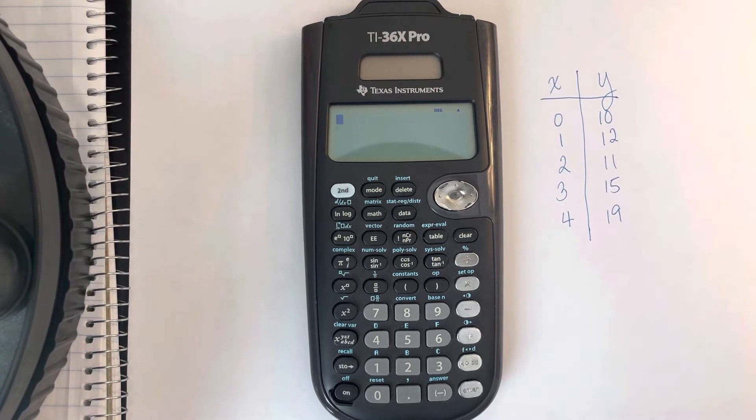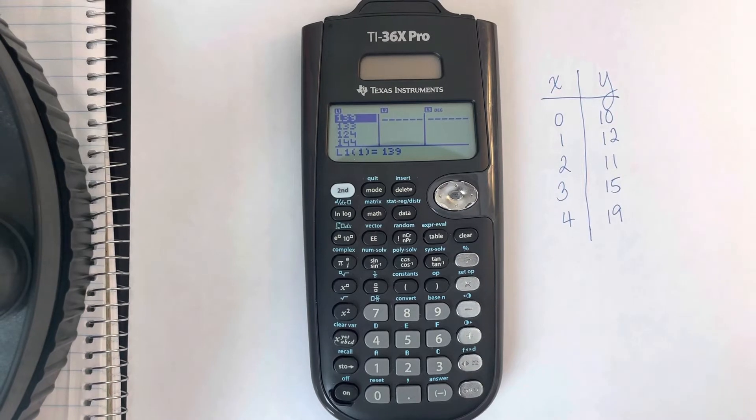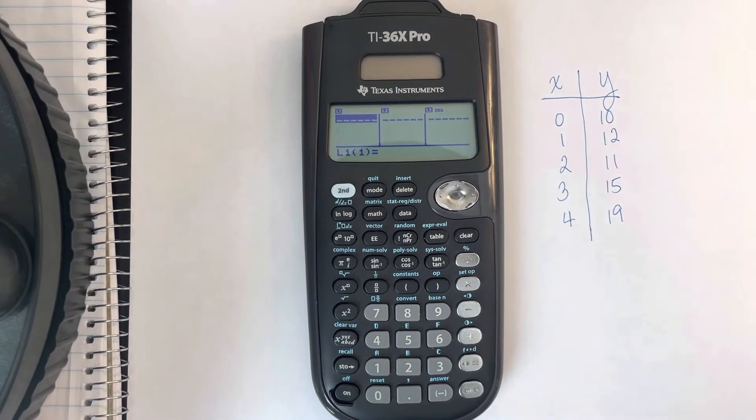First we're going to enter our data values into our list editor. We'll go to data and if we have any lists that have to be cleared out we'll hit data again. I'm going to go ahead and clear list 1.